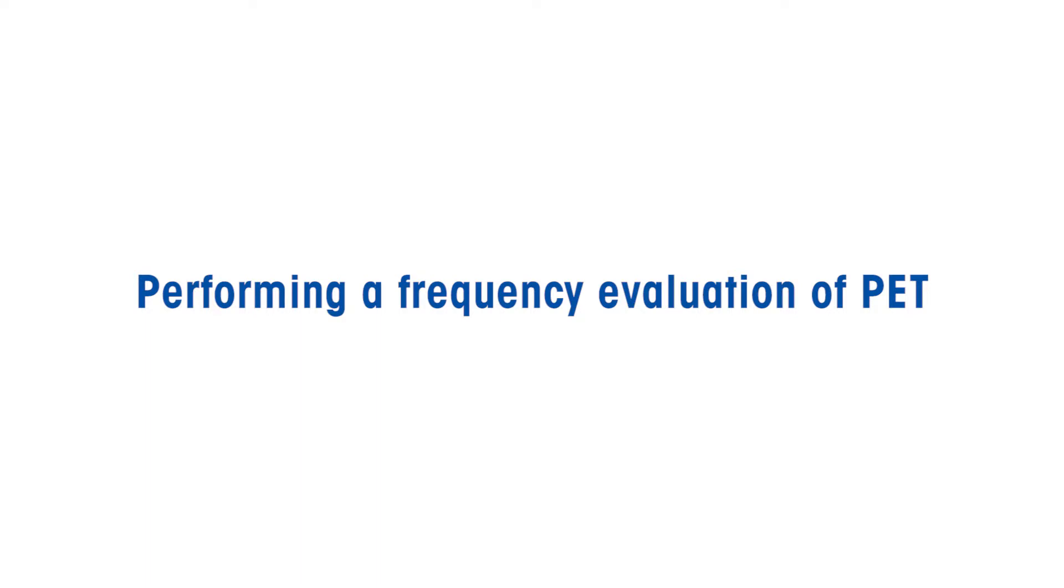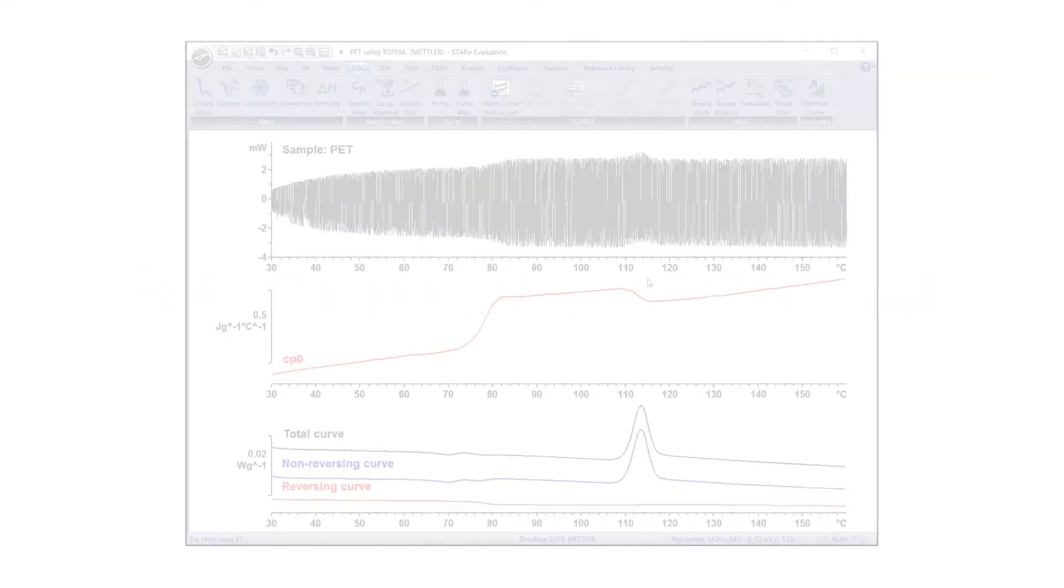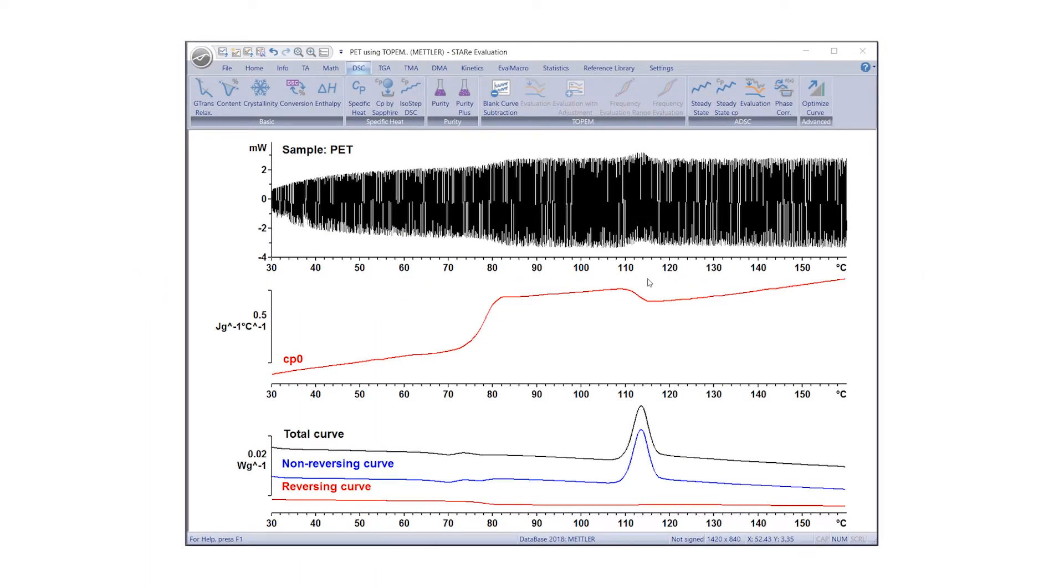To perform a frequency evaluation, on the CP curve, draw a frame around the transition region of interest. Select the curve, then in the ribbon, go to Topham and click on Frequency Evaluation Range. Interpolation lines are drawn left and right of the transition region defined by the frame.